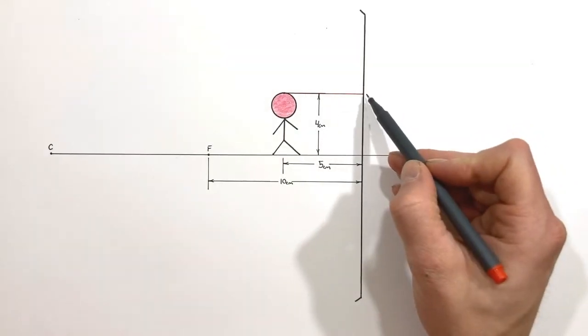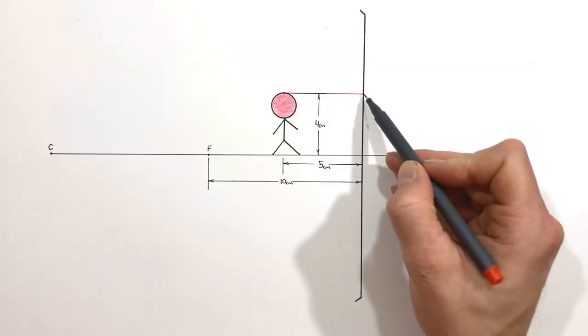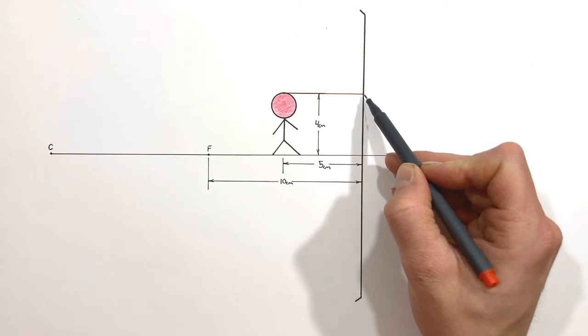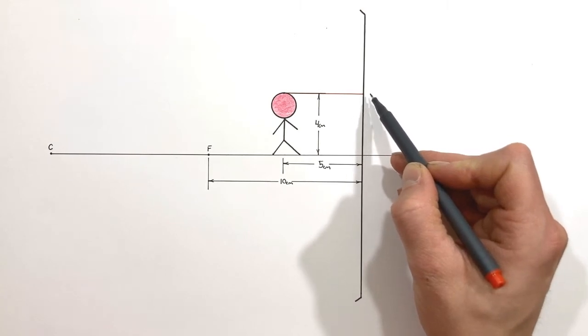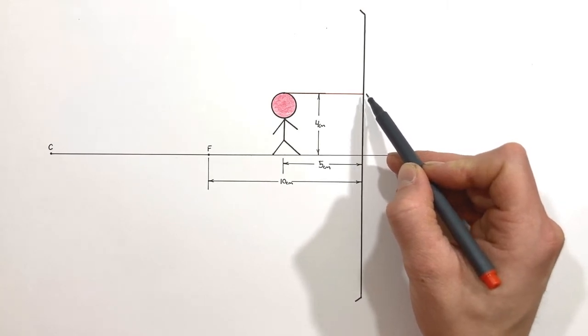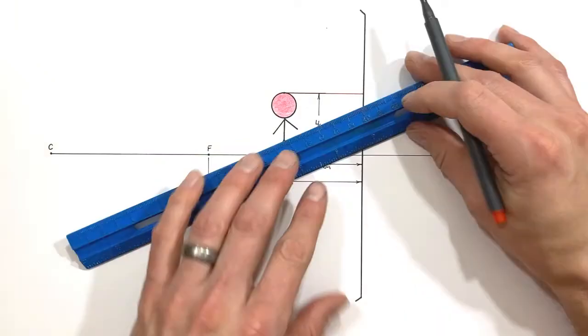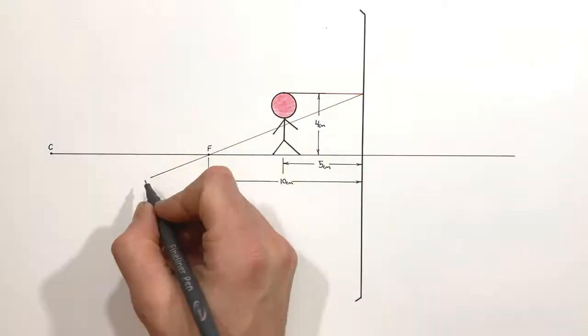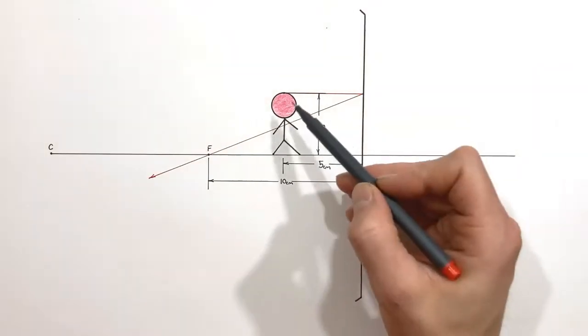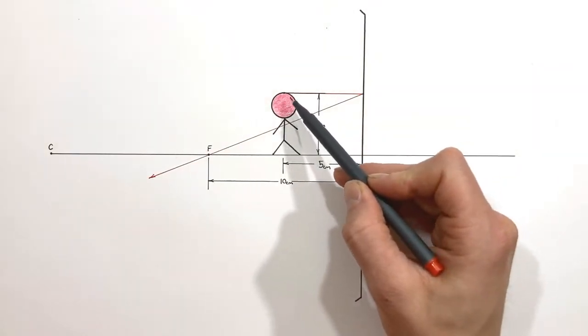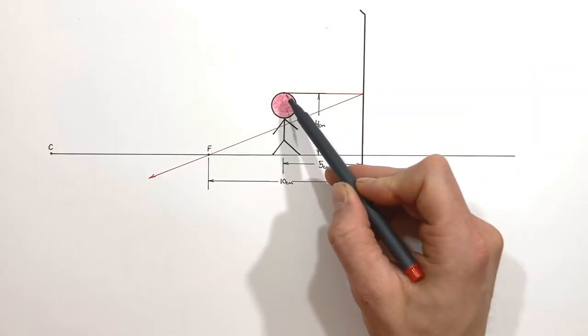When that principal ray strikes the mirror, it's going to bounce off of the mirror and pass through the focal point. The next ray we'll look at is the center ray — the ray which passes through the center point of the mirror.